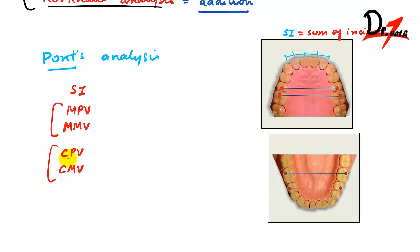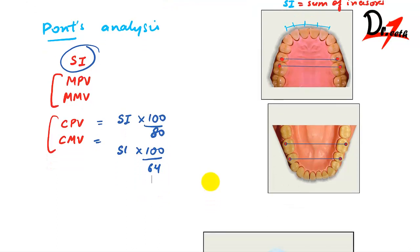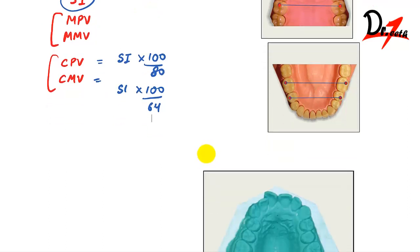To calculate these values, there is a formula. CPV = SI × 100/80, and CMV = SI × 100/64. This is how we calculate the premolar value and the molar value. For measuring, we take a caliper and measure from one premolar to the other and from one molar to the other.